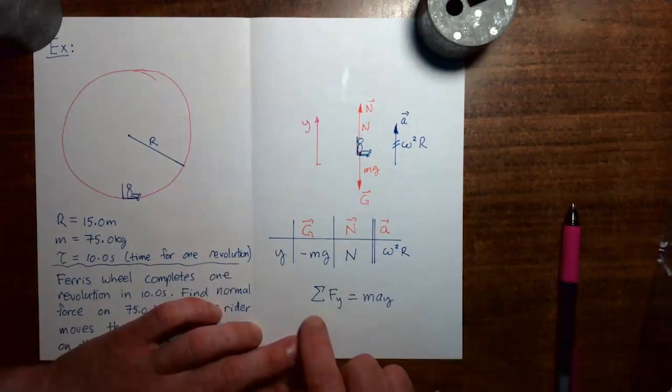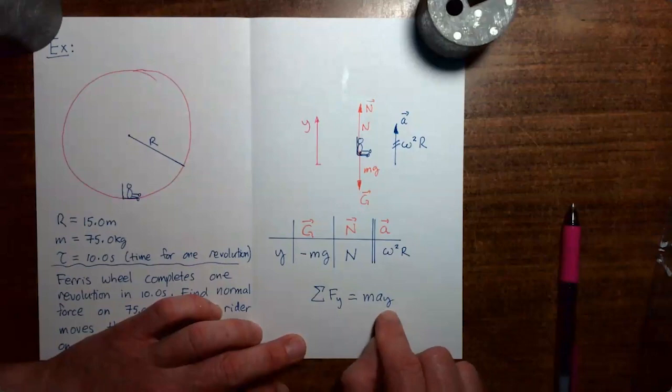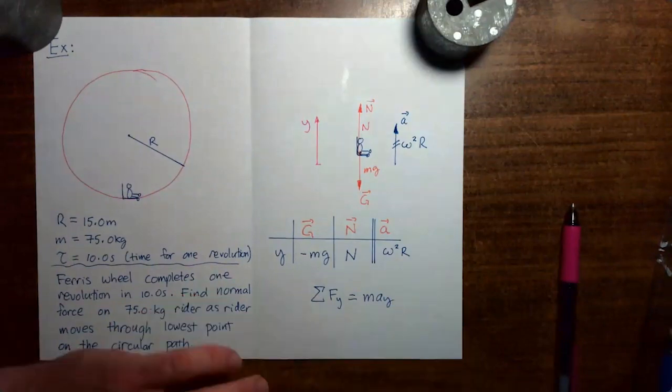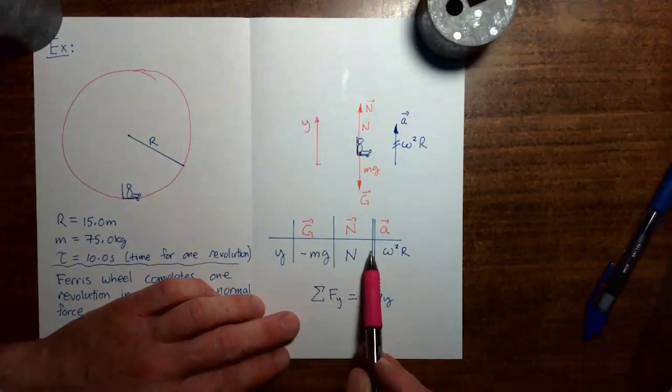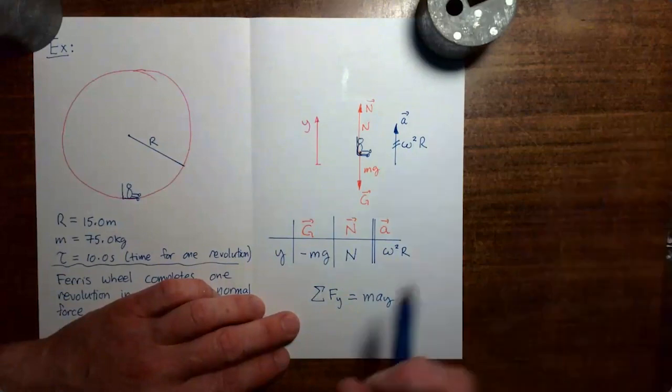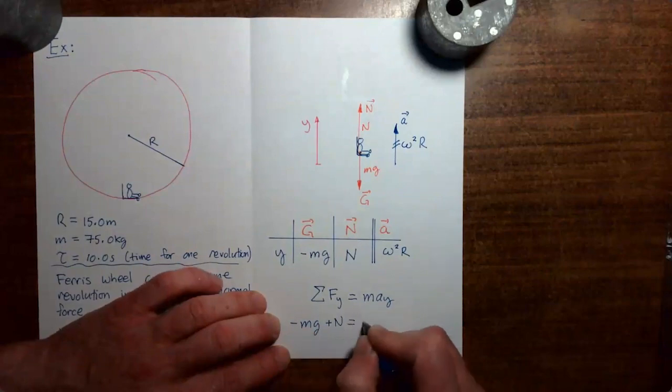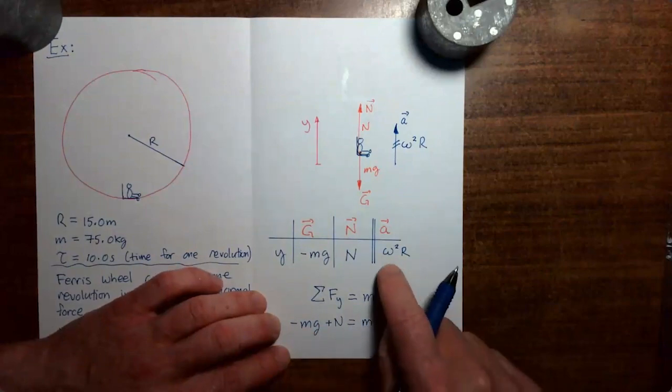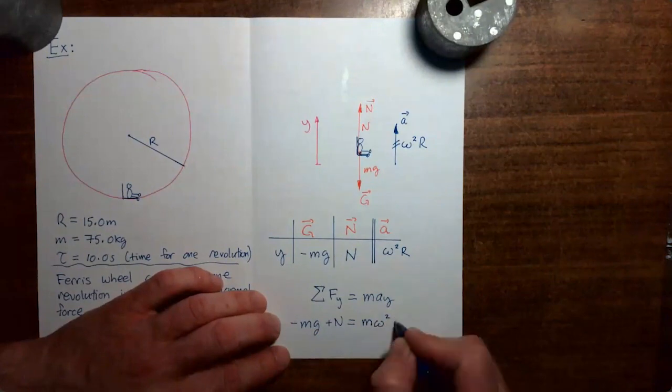The y component of Newton's second law says that the sum of the y components of the forces acting on the rider equals the mass of the rider multiplied by the y component of the acceleration of the rider. The sum of the y components of the forces, we're just going to read along the table like so, stopping at the double line. So we get minus mg plus n equals mass. The y component of the acceleration is this thing here, so let's stick that in there. Omega squared r.